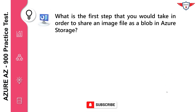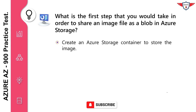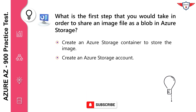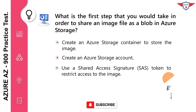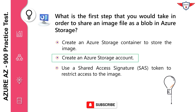What is the first step that you would take in order to share an image file as a blob in Azure Storage? Create an Azure storage container to store the image. Create an Azure storage account. Use a shared access signature token to restrict access to the image. The correct answer is create an Azure storage account. You must create an Azure storage account before you can use any Azure storage features.